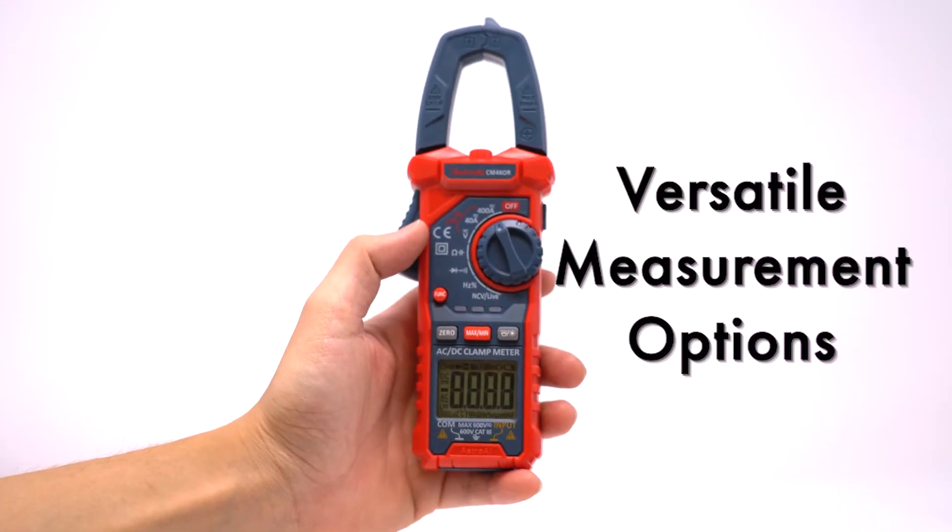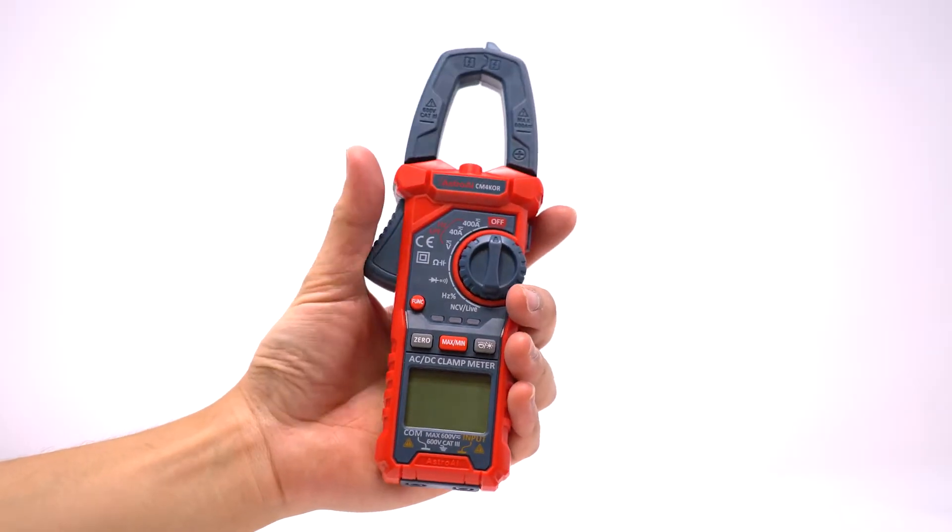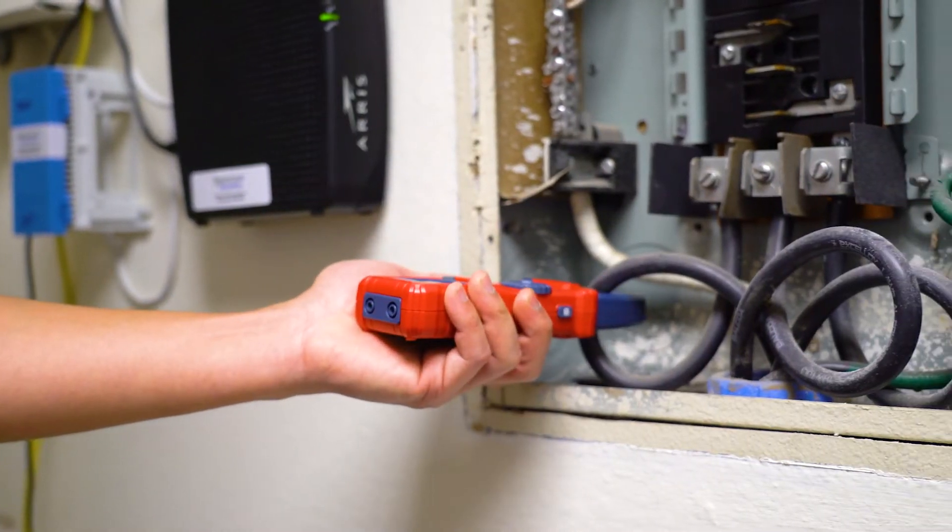Select the measurement mode with the rotary dial and use the function button to change the unit of measurement. Press the trigger to open the jaws in order to safely test AC current.